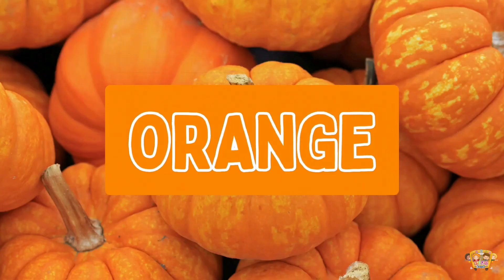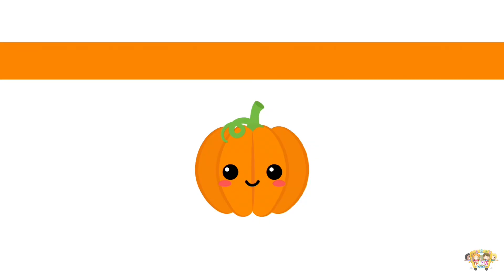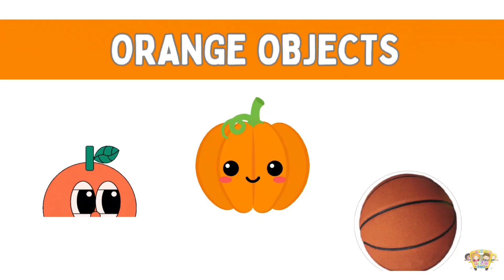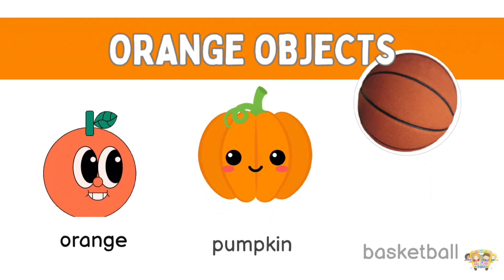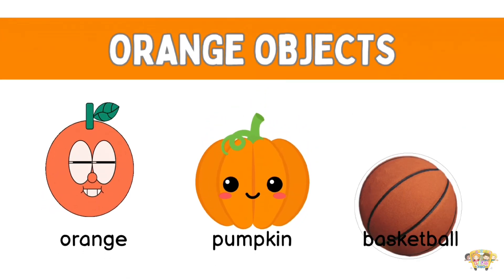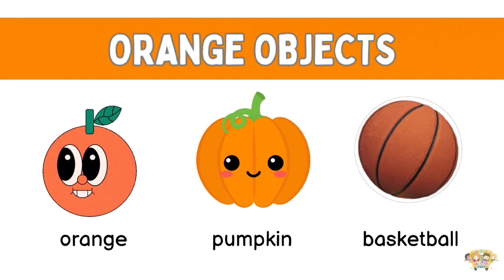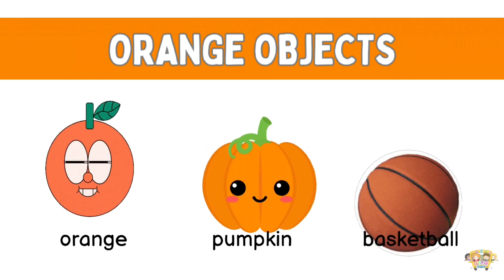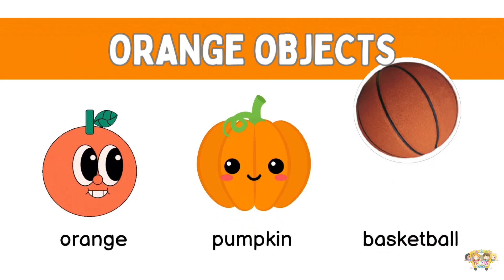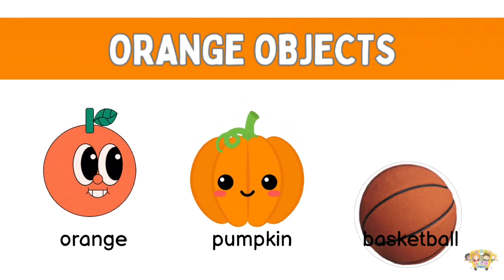Moving on to the color orange. Objects that are orange are orange, pumpkin and basketball.